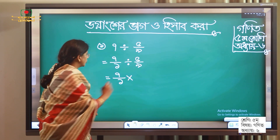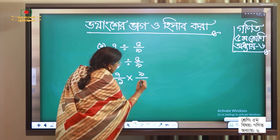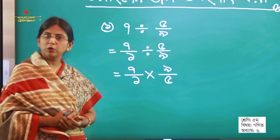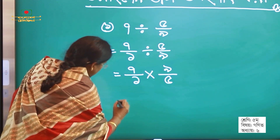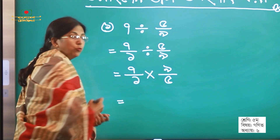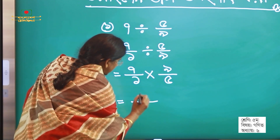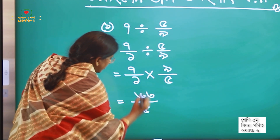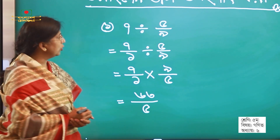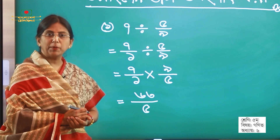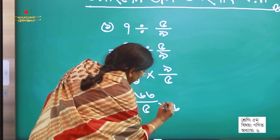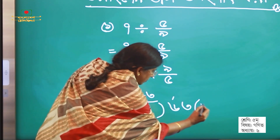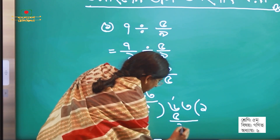নিচে কতো লিখবো? ঠিক বলেছো, নিচে হবে 1 ভাগ 9 ভাগের 5। এবার পরের ভাগনাংশটি, দ্বিতীয় ভাগনাংশটি কী হবে? দ্বিতীয় ভাগনাংশটি বিপরীত ভাগনাংশ হবে। একবার দেখো এটা লগিস্টো আকারে প্রকাশ করা যাচ্ছে কিনা? এটা আমরা লগিস্টো আকারে কাবে 5। তালে আমাদের কতো আসলো ফল? 13 ভাজ 5। চলো তো দেখি এটা আমরা মিশ্র ভাগনাংশে প্রকাশ করে দেই।